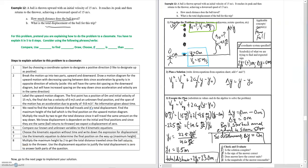Starting with the first step, start by choosing a coordinate system to designate a positive direction. I like to designate up as the positive direction. This is step 1 right here where I've designated the upward direction to be the positive y direction.